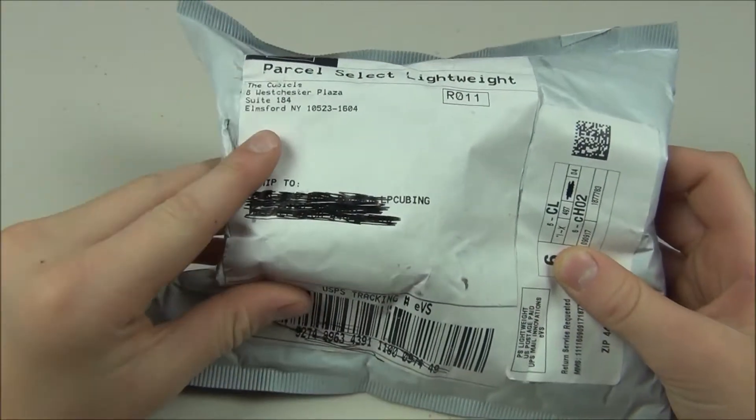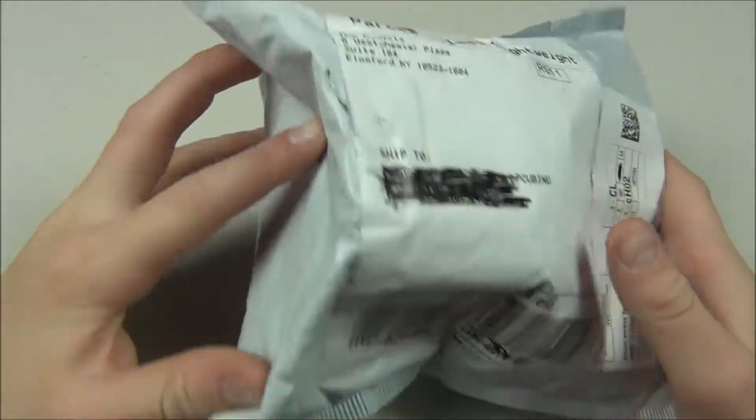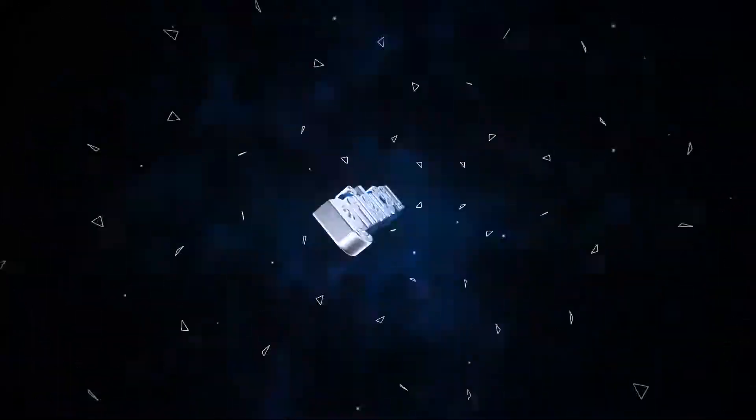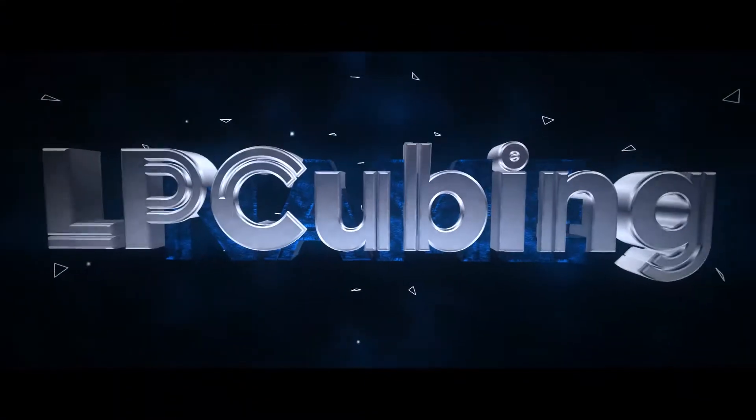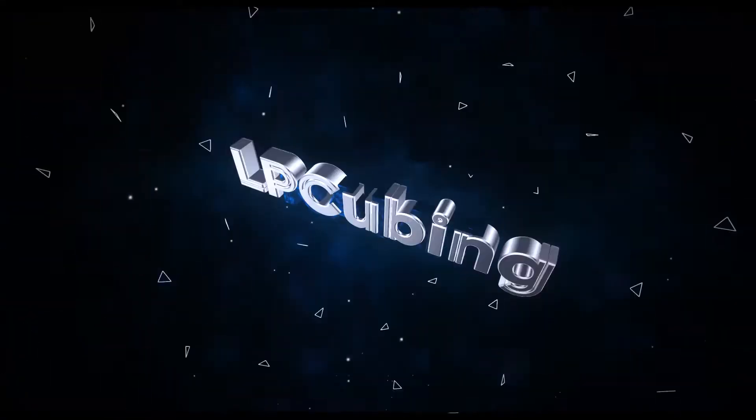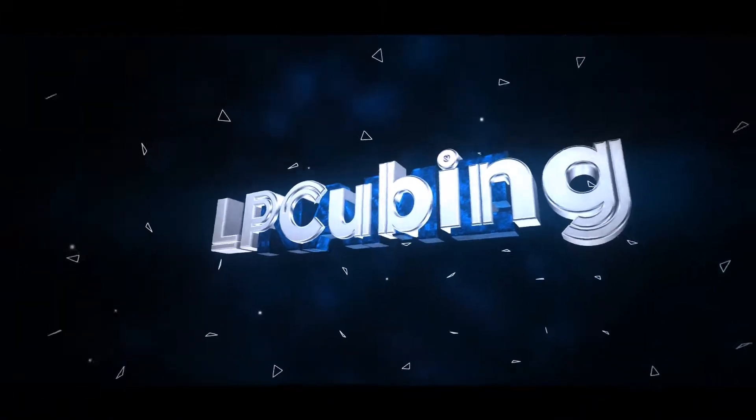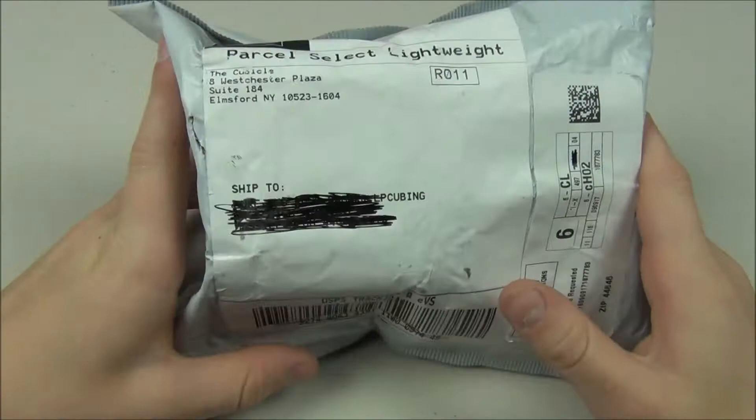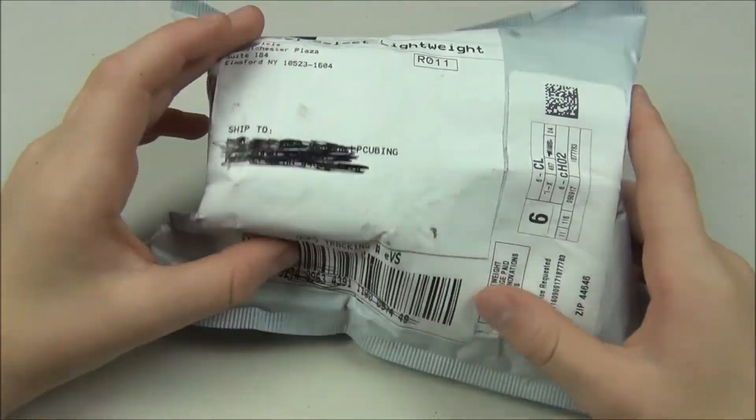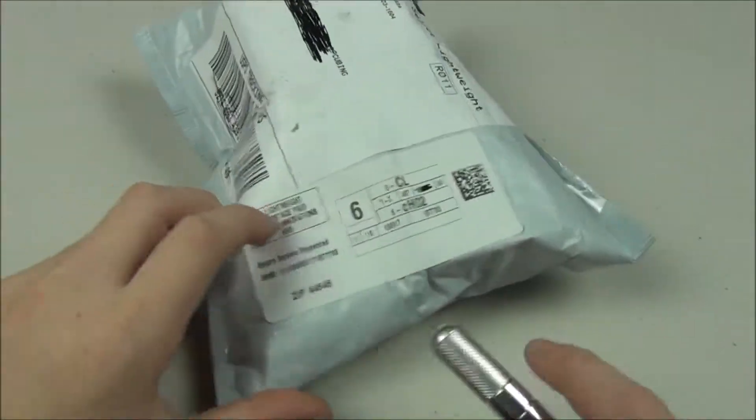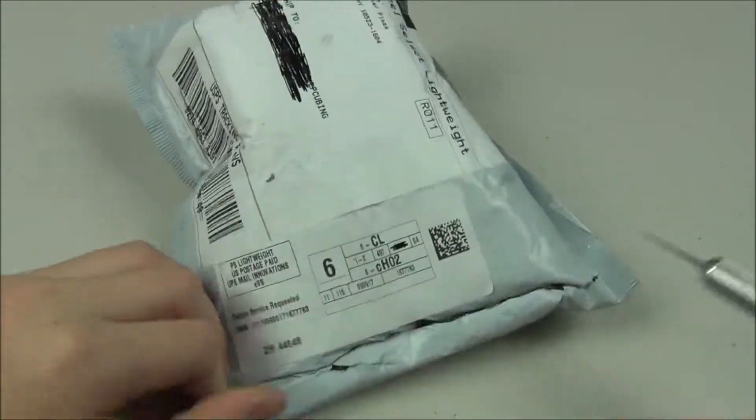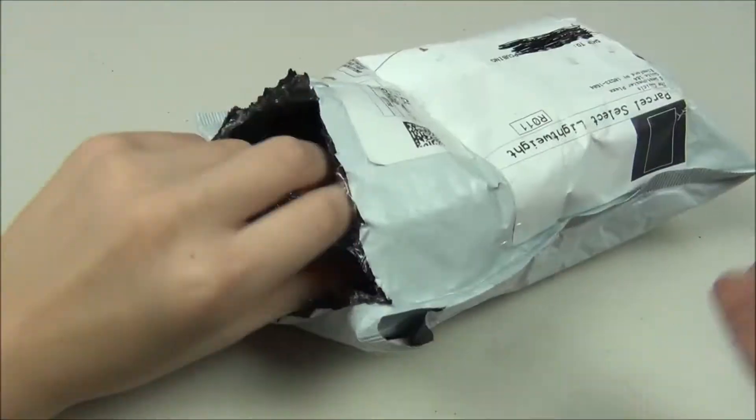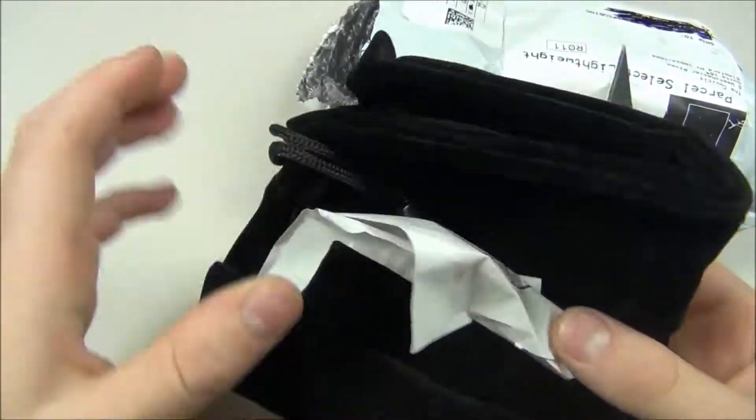Welcome back guys, this is Luke with LP Cubing. Today we have another unboxing from the cubicle. What we have in here is the Yushin 5x5. I ordered a couple other things too that are in here, but what we're going to be talking about is the Yushin 5x5. So I also ordered a cubicle bag.